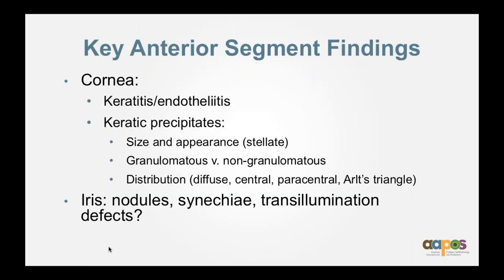What you want to look for is pars plana involvement for intermediate uveitis: snowballs, snowbanking, exudate, and sometimes peripheral vascular sheathing. Key anterior segment findings to keep in mind: is there a keratitis or endotheliitis? That leads you toward the viral pathway. What do the keratic precipitates look like? Size and appearance — are they stellate, granulomatous versus non-granulomatous? And then distribution: are they diffuse, central, paracentral, or in an Arlt's triangle?